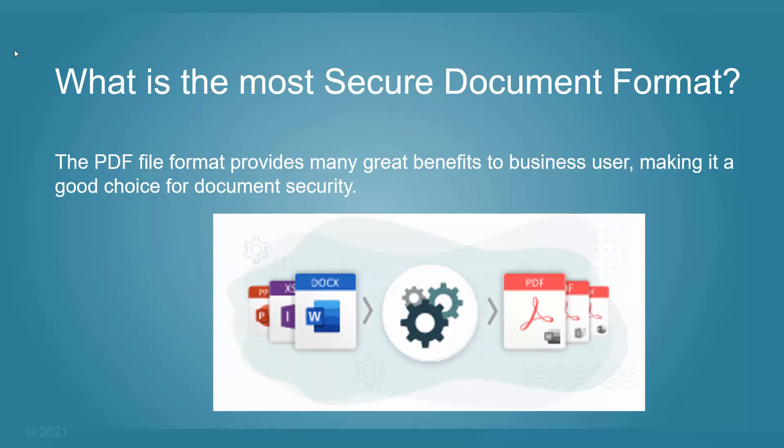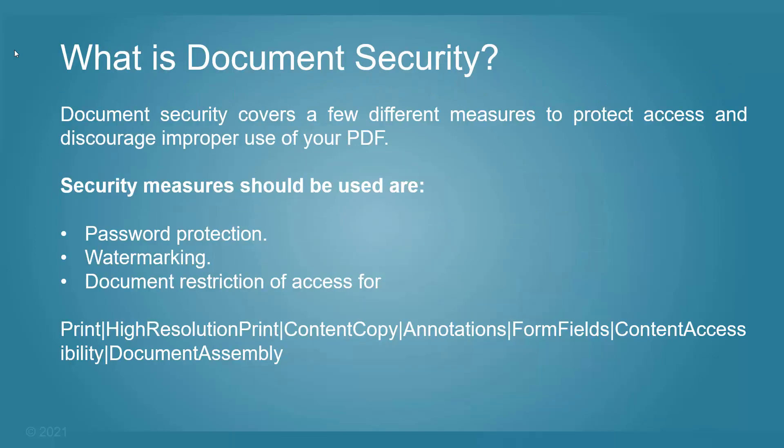The first question that comes to mind is: what is the most secure form of document? The answer is PDF. PDF file formats provide many great benefits — one of the main benefits is that it cannot be easily manipulated, whereas Office documents can be easily edited and manipulated by end-users. So converting Office document types to PDF will give you a more secure document format. However, just converting documents to PDF — will that suffice? The answer is no, because there are modern editors which can still edit and manipulate the document.